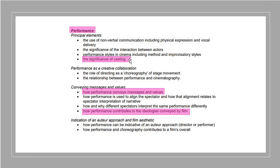For performance: think about the significance of casting. Was the actress who plays Mia known or unknown? Why did Andrea Arnold choose Michael Fassbender at the time — was he a well-known actor or not? Is there significance in the fact that he has a different accent to Mia, perhaps presenting him as somebody from a different area? How has the performance conveyed messages and values — do we understand different messages through the way that the characters perform their roles? And how do the performances contribute to the ideologies of the film?